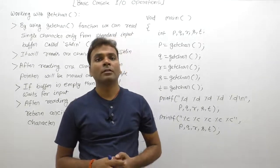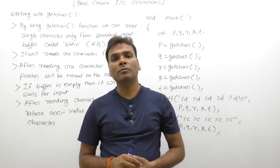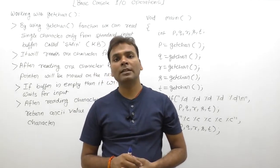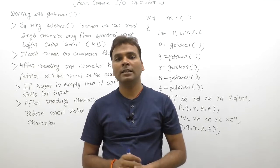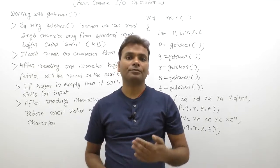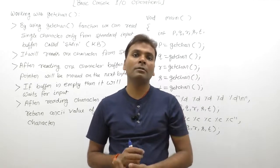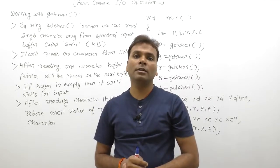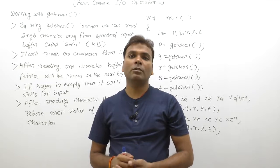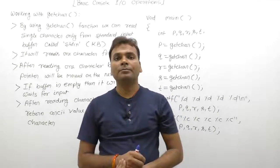After reading a single character from the current position of the buffer pointer, the pointer moves to the next byte in the buffer. This is the third step — after reading the character or bytes from the buffer.